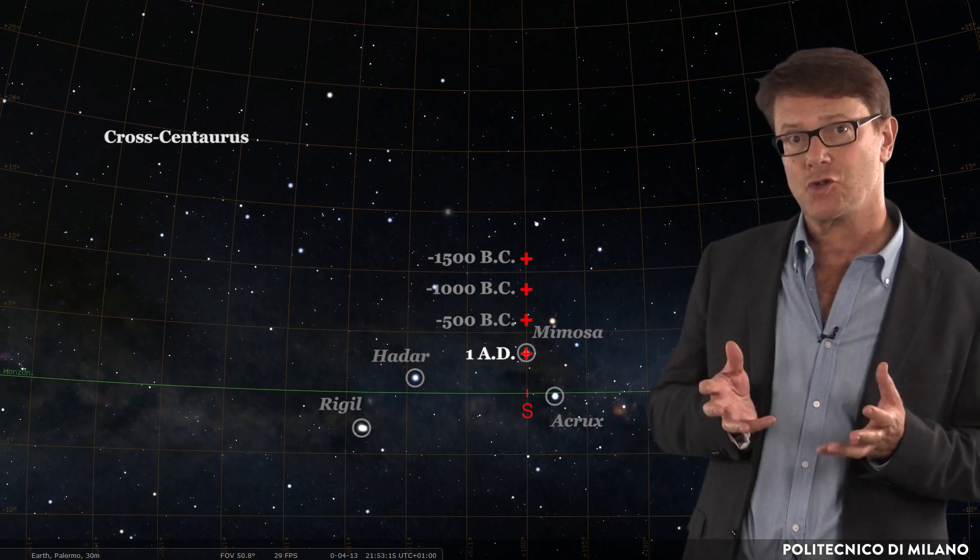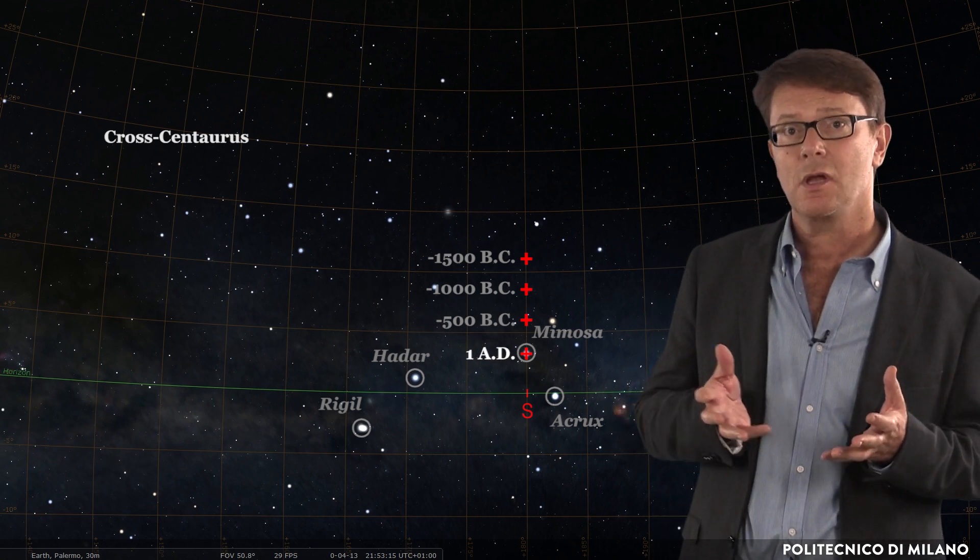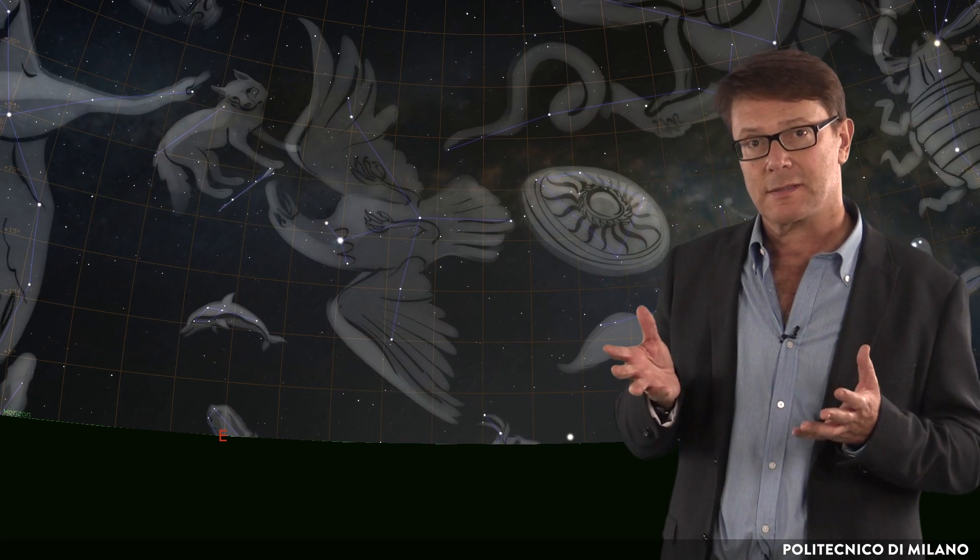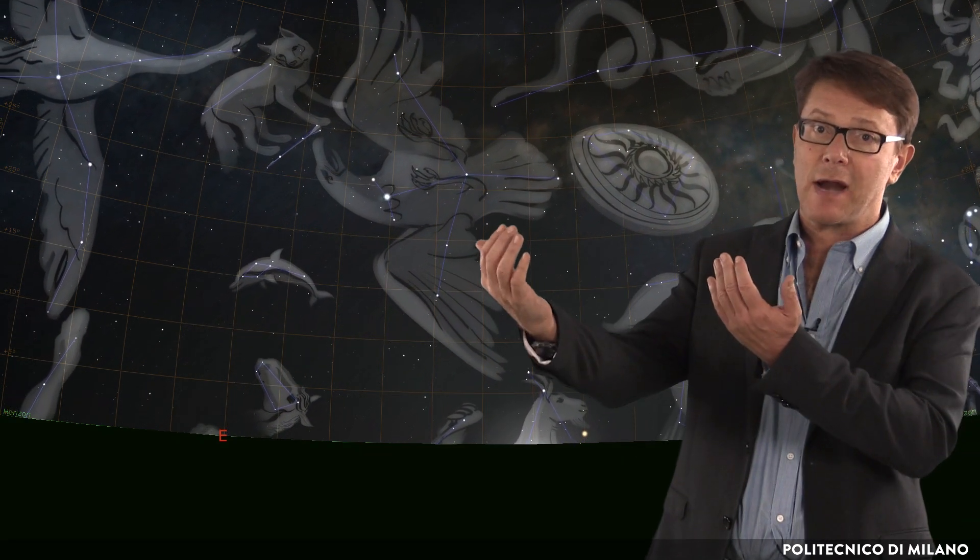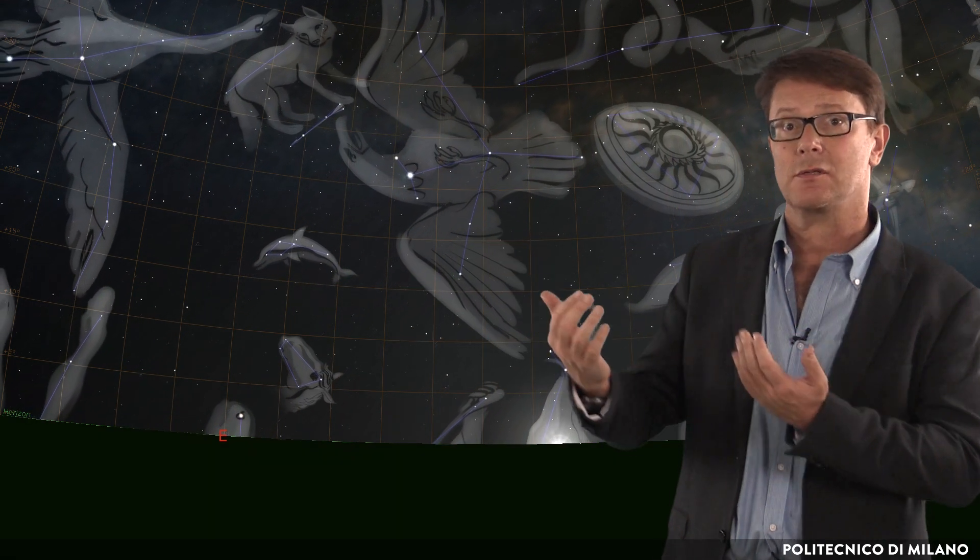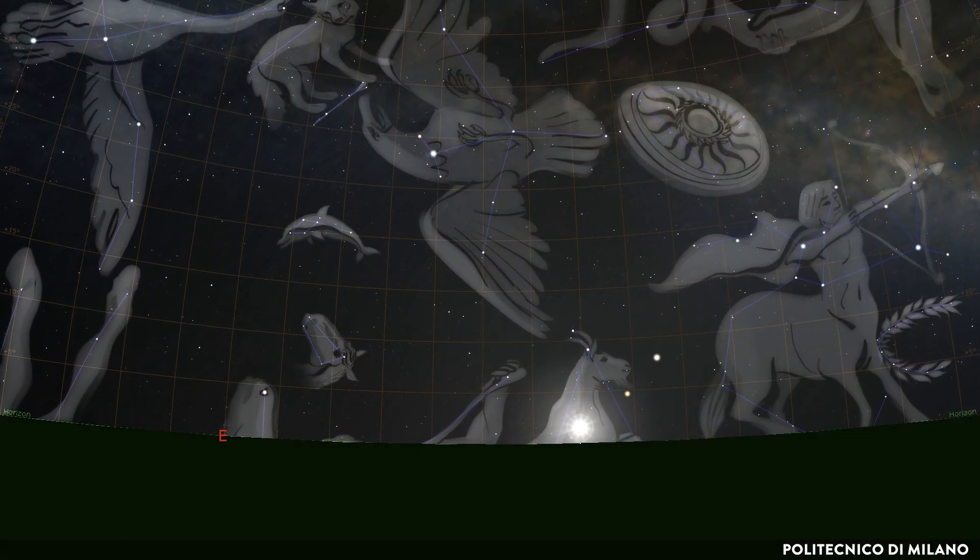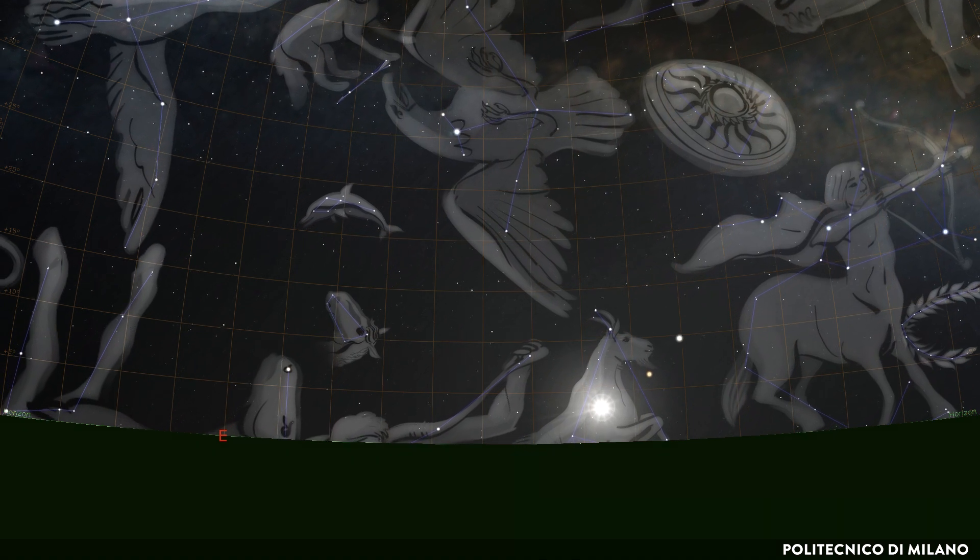As precession changes the declination of the stars over the centuries, one of its effects is that it changes the background stars where the Sun rises on a fixed day of the solar year. In particular, of course, this occurs at the equinoxes.